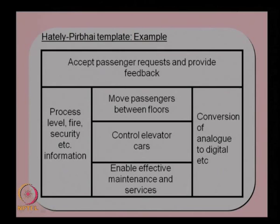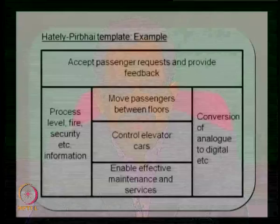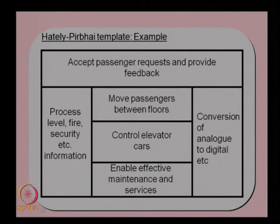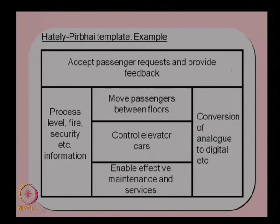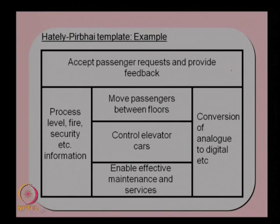These are only the level-one functions — we need to divide these functions again into sub-functions. If we take 'accept passenger request and provide feedback' as one function, it can be further subdivided. Similarly, 'control elevator cars' can be subdivided. We go back to the HP template and replace the process model with 'accept passenger request and provide feedback,' then identify all the sub-functions needed to provide that particular function, and keep doing this until we reach the lowest level.